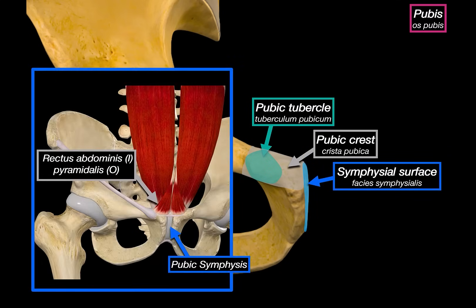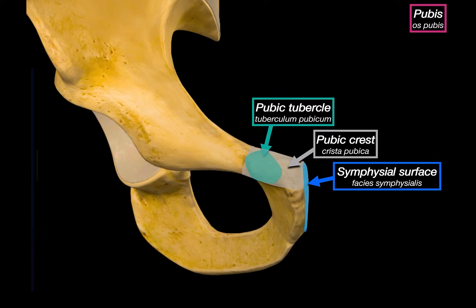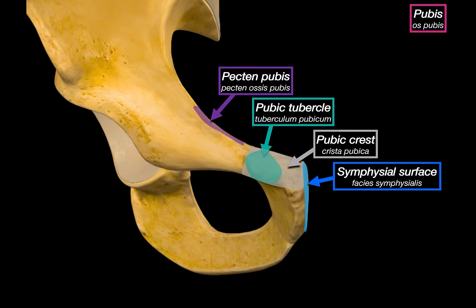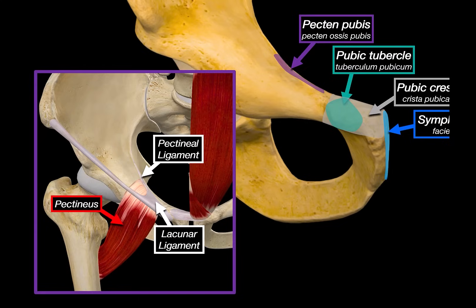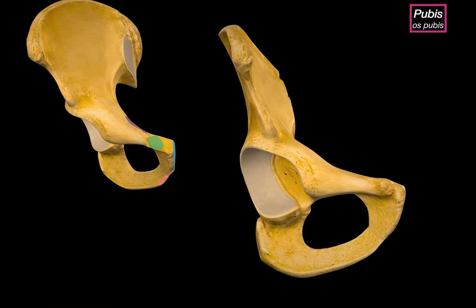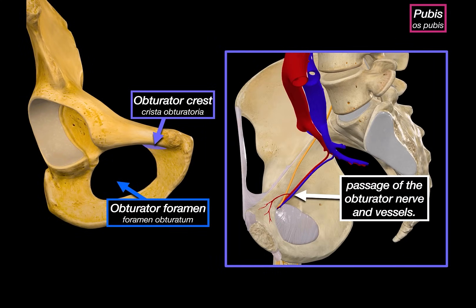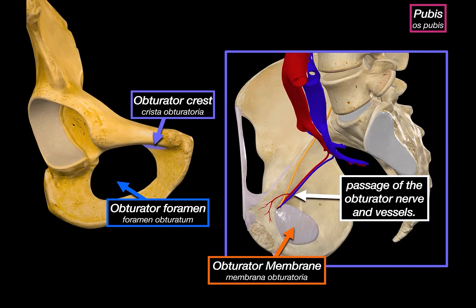The pubic crest is a ridge that provides insertion for the rectus abdominis, and just lateral to that, origin for the pyramidalis muscle. The symphysial surface — the flat articular area — contributes to the pubic symphysis, which unites the two pubic bones at the midline. Running along the upper border of the superior pubic ramus is the pecten pubis, also known as the pectineal line, which is the origin for the pectineus muscle and where both the lacunar ligament and the pectineal ligament are found. Rotating the view slightly, we can see the obturator crest — a raised bony margin just above the obturator foramen — which helps define the path of the obturator nerve and vessels passing through the small opening in the obturator membrane, the fibrous sheath covering most of the obturator foramen.